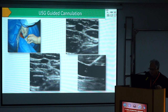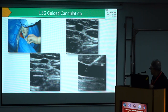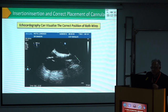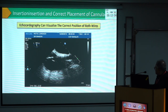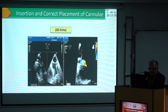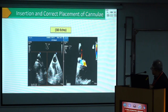You can see the wire going in there. The placement of the bicaval cannula — you can see the atrial septum, the SVC, and the IVC. You can see the placement of the cannula. This is a short axis of the aorta; you can see the wire going in and the flow across.